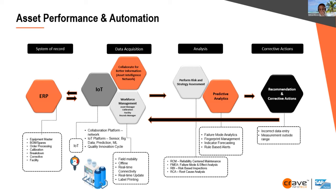We divided the journey into four segments. The first is system of record — most organizations have this; if you have SAP you have it, or another ERP or CMMS system to capture equipment master, bill of materials, order processing, calibration, and breakdown — all master data and transaction data digitized in an ERP. The next step is: how do I capture issues at the source? Instead of printing work orders and having them filled in later, how do I acquire data effectively at the source?